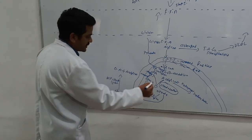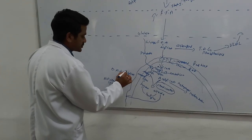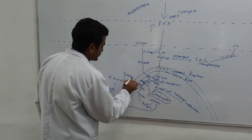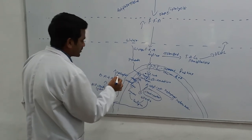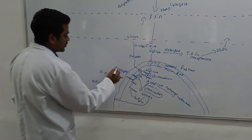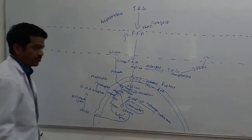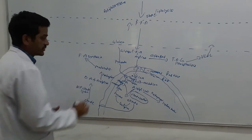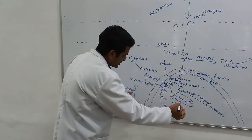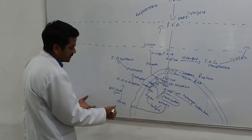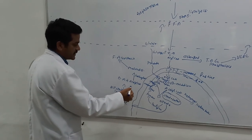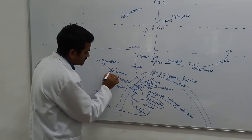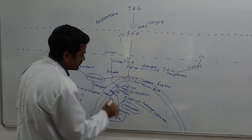The acetyl-CoA formed in the cytosol is acted upon by the enzyme acetyl-CoA carboxylase, present inside the cytosol. Acetyl-CoA is converted into malonyl-CoA. Malonyl-CoA is useful for fatty acid synthesis. This occurs in the fed state. In the fed state, the citrate formed outside the mitochondrial membrane is converted into acetyl-CoA, and acetyl-CoA by carboxylase is converted into malonyl-CoA, which is useful for fatty acid synthesis.